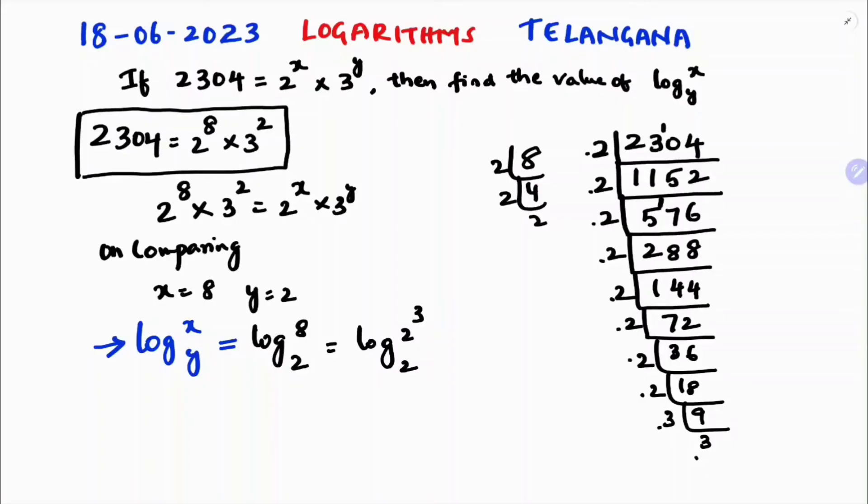Now using the logarithm of power formula: log a power m to the base x equals m log a to the base x. So this power m will come over here. We have 3 log 2 to the base 2. Using the property that log a to the base a is 1, the answer is 3 times 1, which is 3.